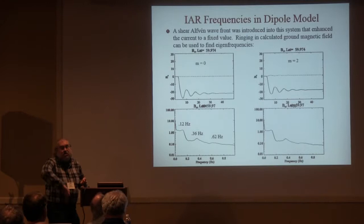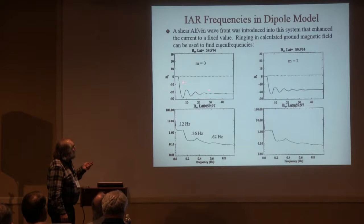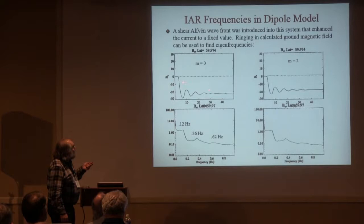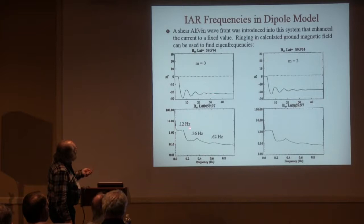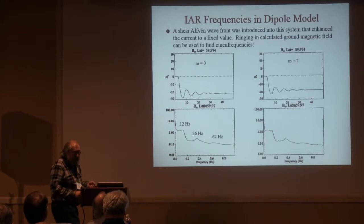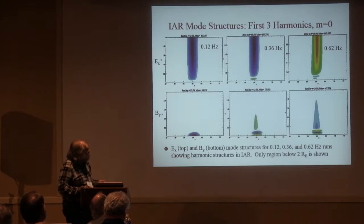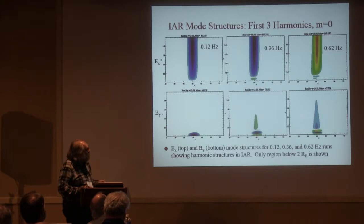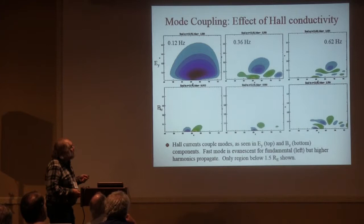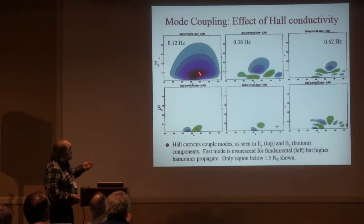One way to test this is to turn on a current and see what happens. You get a ringing effect — you see it in both EX and BY. If you Fourier transform this signal, you get a number of frequencies that are exactly what you'd expect for the IAR. If you drive the system at those frequencies, you see in both the electric and magnetic field a nice resonant structure with one, two, and three bumps in the low-altitude region. If you include Hall conductivity and the more generalized boundary condition, the lowest mode actually doesn't do much — it just decays away, because that's at the cutoff of those dispersion relations.